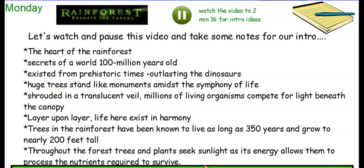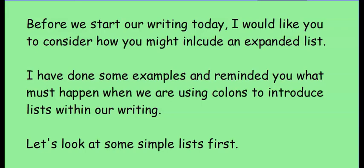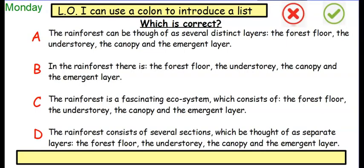Hopefully you've made as many notes as I did and you've got the gist of what he was saying in the introduction — we've now got some ideas for what we might do to construct our own. Now, our sentence level work today revisits our work on expanded lists from a couple of weeks ago when you had a SPAG lesson on this. I've done a couple of examples to remind you what must happen when we're using colons to introduce a simple list within our writing, and then I'll show you how we can expand these as well. We've got some yes, right, or no answers here — I want you to decide which of these sentences are correctly written and which ones use the colon accurately. You might want to pause the video as I go through each one.